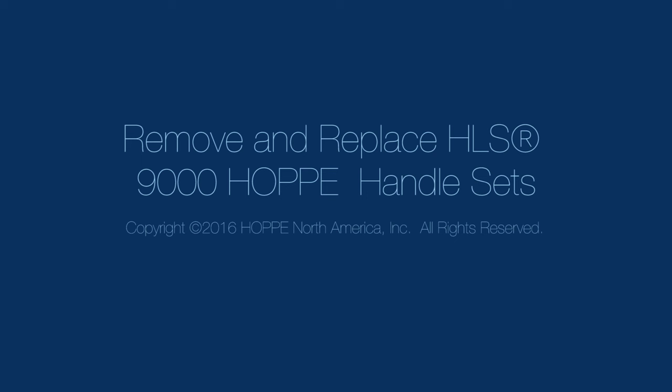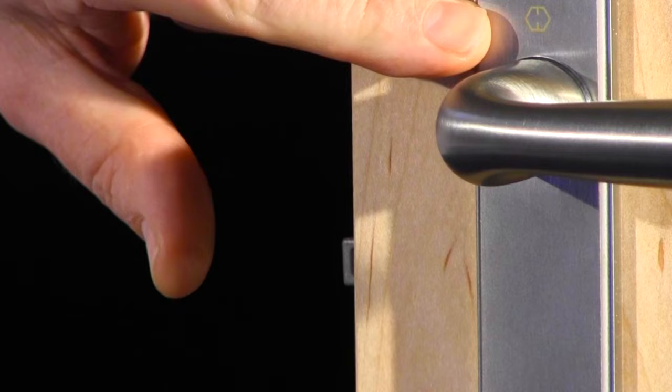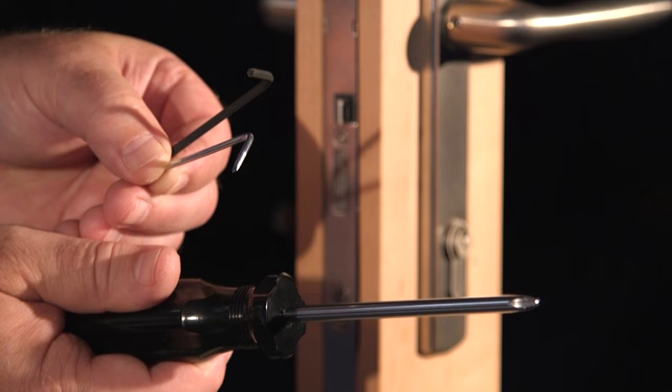First, be certain that you are in fact working with the famous HOPPE HLS 9000 multi-point lock. You can be certain if you see the trademarked symbol on the side of the high-quality stainless steel lock and backplates of the handle sets.